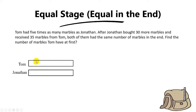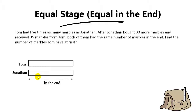Since the question says that both of them had the same number of marbles in the end, we can draw two equal models to represent the number of marbles they have in the end. Remember, right now we are working backwards, so because the question says 'same number,' these two models must be the same length in the end.